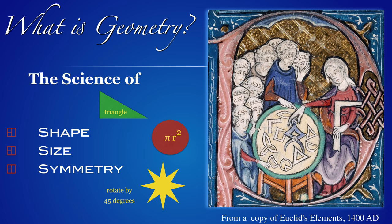Here is an attempt of a definition. Geometry is the science of shape, size and symmetry. An example of a shape is a triangle. An example of a size is the area of a disk. An example of a symmetry is a rotational symmetry, like an eightfold symmetry seen here.